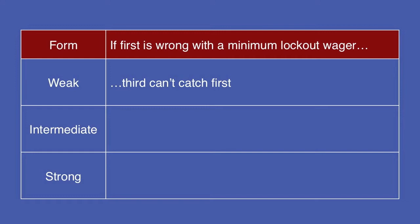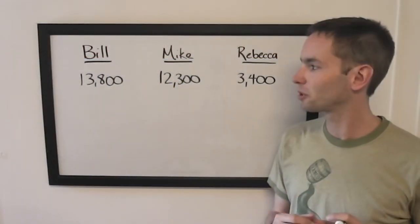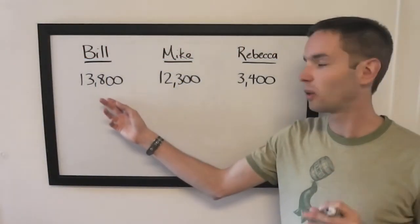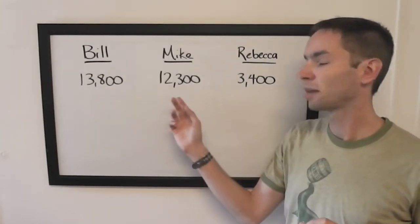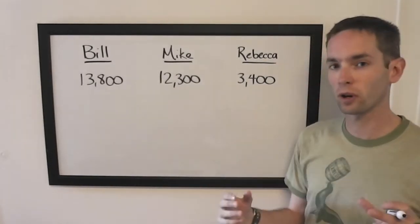Now I'm not really interested in weak situations, so let's look at an example of a strong situation. Here we've got Bill, the same Bill, in the lead with 13,800, Mike with 12,300, and Rebecca with 3,400.